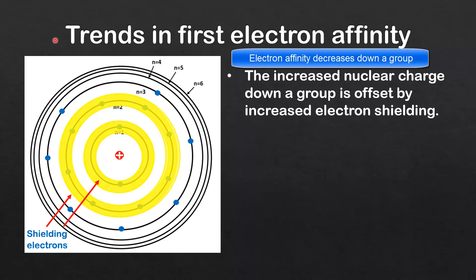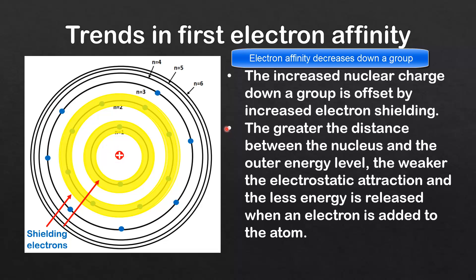The increased nuclear charge down a group is offset by increased electron shielding. Electron shielding occurs when the inner electrons — for example those in n=1 and n=2 — shield the outer electrons in n=3 from the positive attraction of the nucleus. The second reason is that the greater the distance between the nucleus and the outer energy level, the weaker the electrostatic attraction, and the less energy is released when an electron is added to the atom.